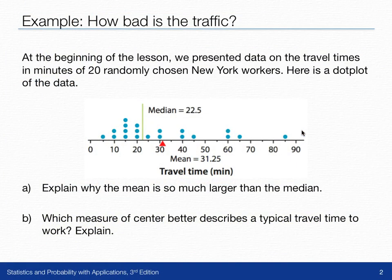At the beginning of the lesson, we presented a data set on several travel times from 20 randomly chosen New York workers. This is the dot plot. The median is here at 22.5, whereas the mean is at 31.25.